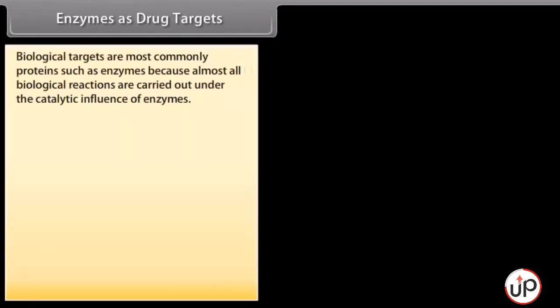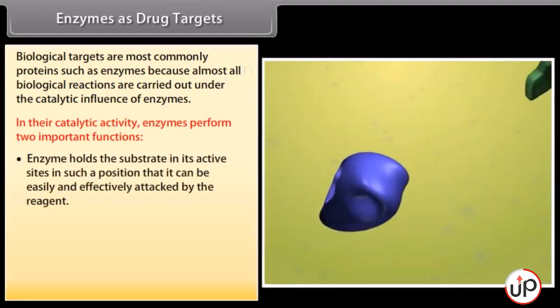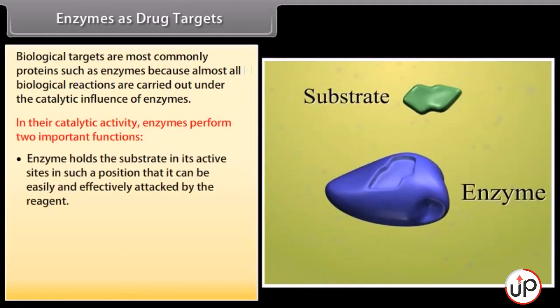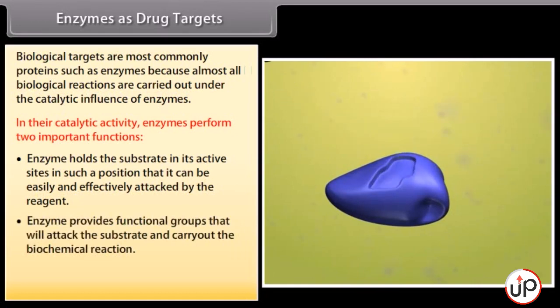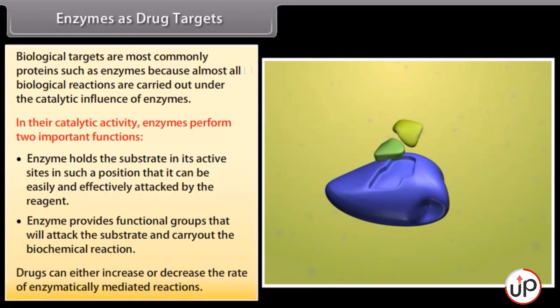Enzymes as drug targets. Biological targets are most commonly proteins such as enzymes, because almost all biological reactions are carried out under the catalytic influence of enzymes. In their catalytic activity, enzymes perform two important functions: they hold the substrate at their active sites in such a position that it can be easily and effectively attacked by the reagent; and they provide functional groups that will attack the substrate and carry out the biochemical reaction. Drugs can either increase or decrease the rate of enzymatically mediated reactions.